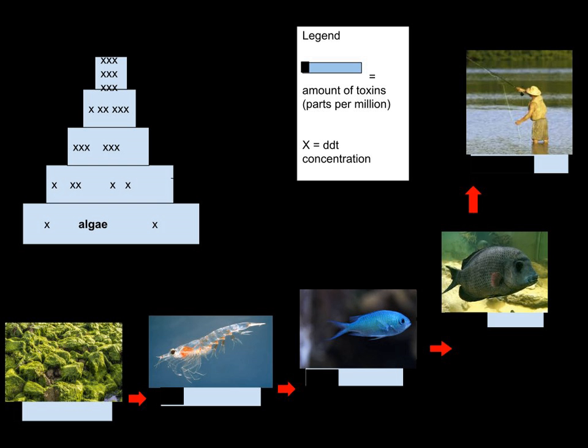This increase can occur as a result of persistence, where the substance cannot be broken down by environmental processes, or food chain energetics, where the substance's concentration increases progressively as it moves up a food chain.